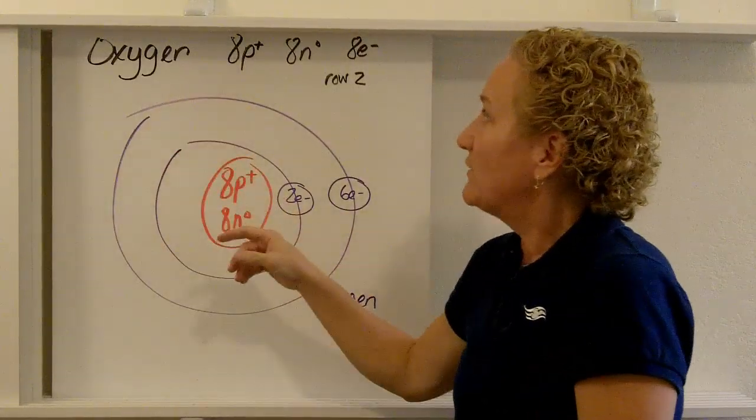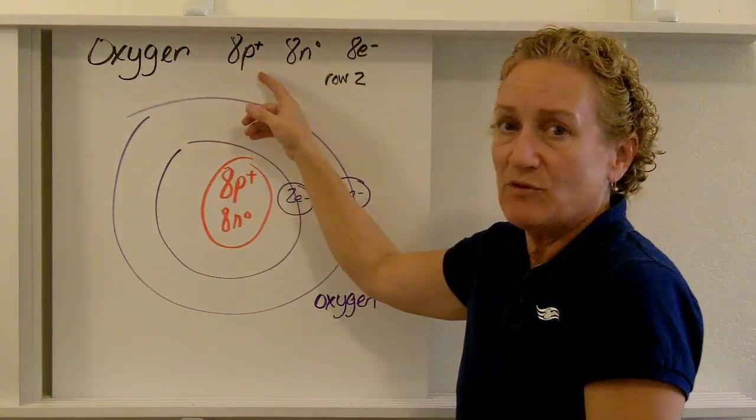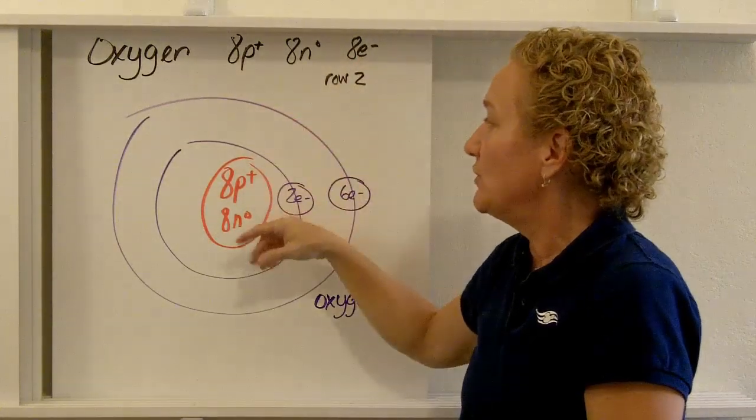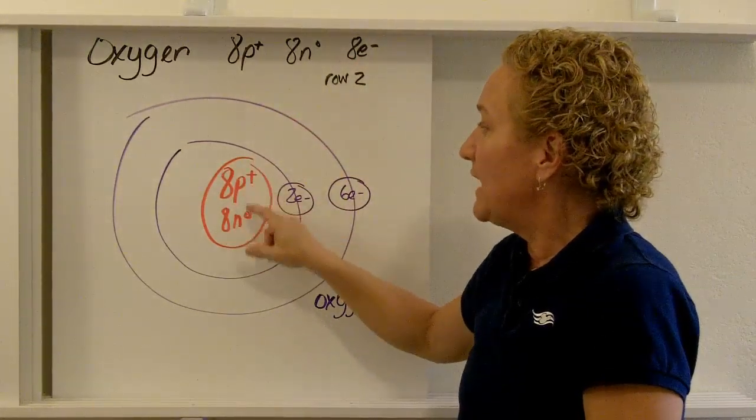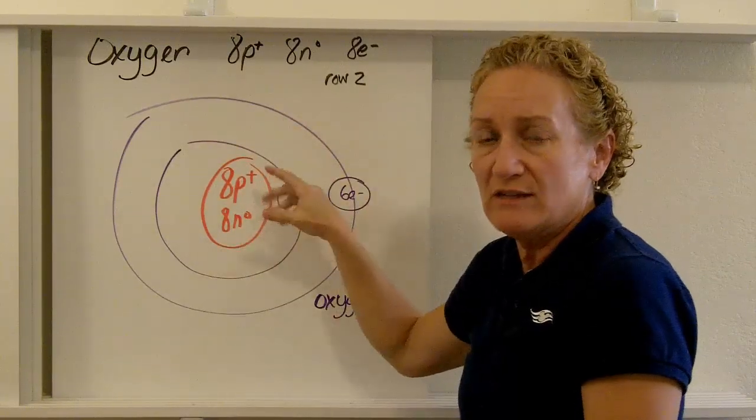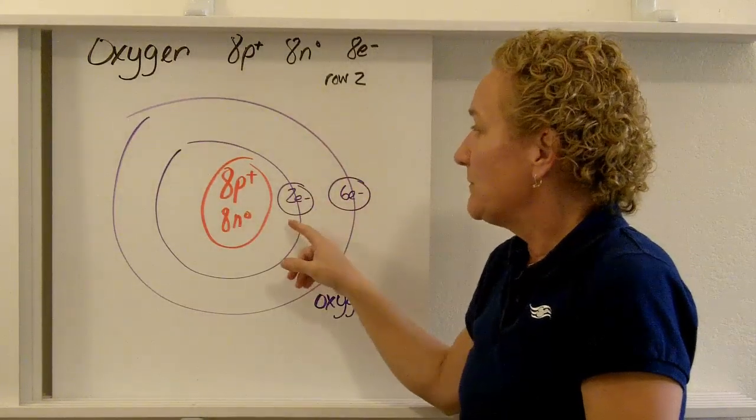Here's another example, oxygen, off the periodic table. I know that oxygen has eight protons, eight neutrons, and eight electrons. And then it's in row two. So I can draw my nucleus with eight and eight. And I'm going to put two little circles around it for my shells or my energy levels because I know it's in row two. The first one, the one closest in, can only hold two electrons.